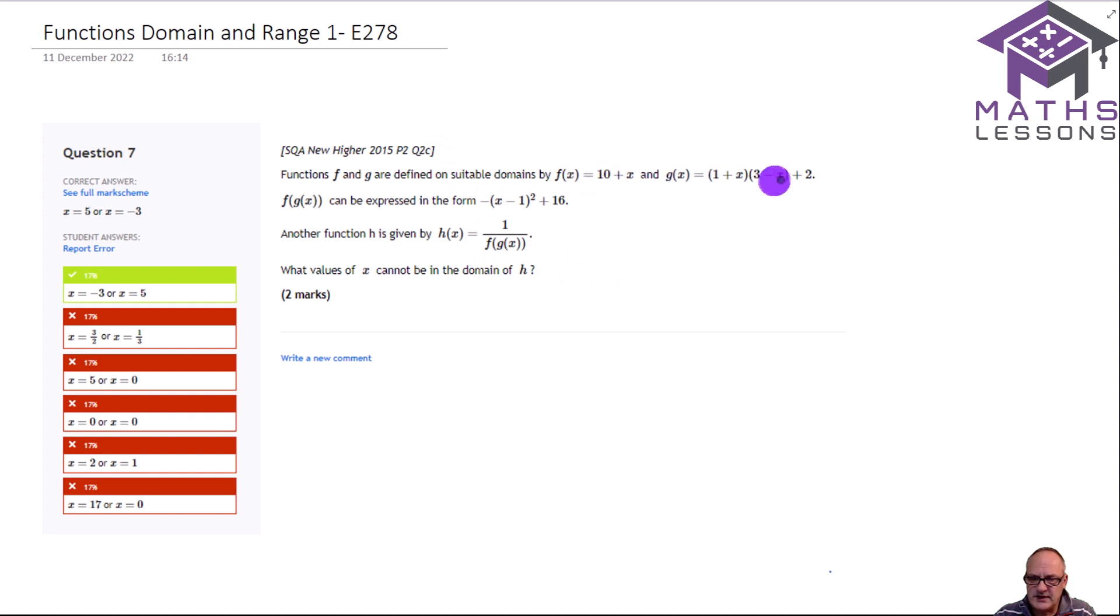In the first one we've got two functions f and g. This is a two-part question from here. I think the first part of the question was to show that f of g of x can be expressed in this form, but the whole point of this homework was to find out what the students knew about domain and range. You're told another function h of x is given by 1 over this f of g of x. What values of x cannot be in the domain of h? And you can see there's quite a wide range of answers with only a few students getting it right.